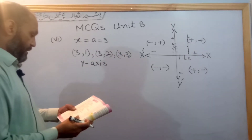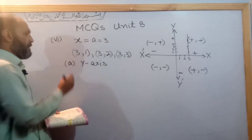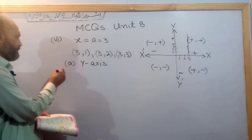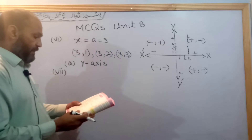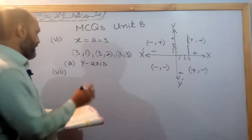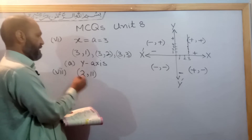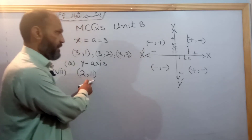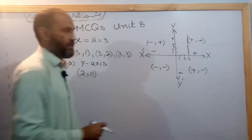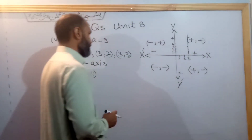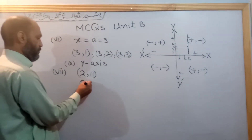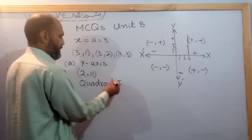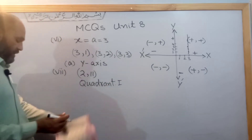Question number seven: the point (2, 11) is located in which quadrant? Both the x-coordinate and the y-coordinate are positive, so it lies in the first quadrant. The answer is quadrant one.